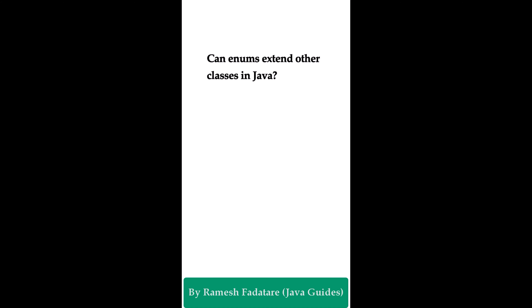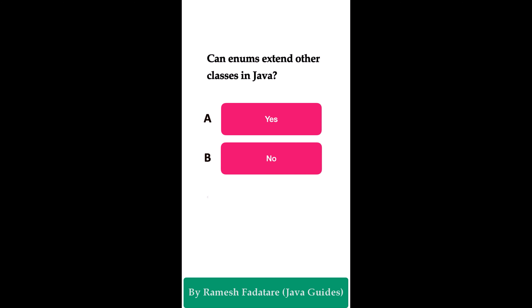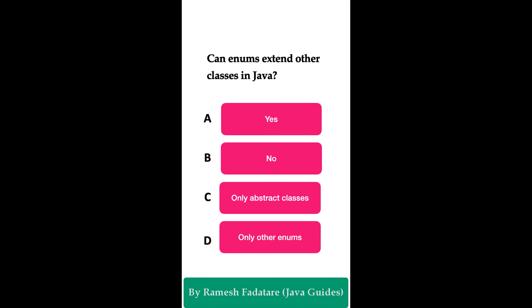Can enums extend another class in Java? Option A: yes. Option B: no. Option C: only abstract classes. Option D: only other enums. The correct answer is no. In Java, enums cannot extend other classes because they already implicitly extend the built-in Enum class. However, enums can implement interfaces.